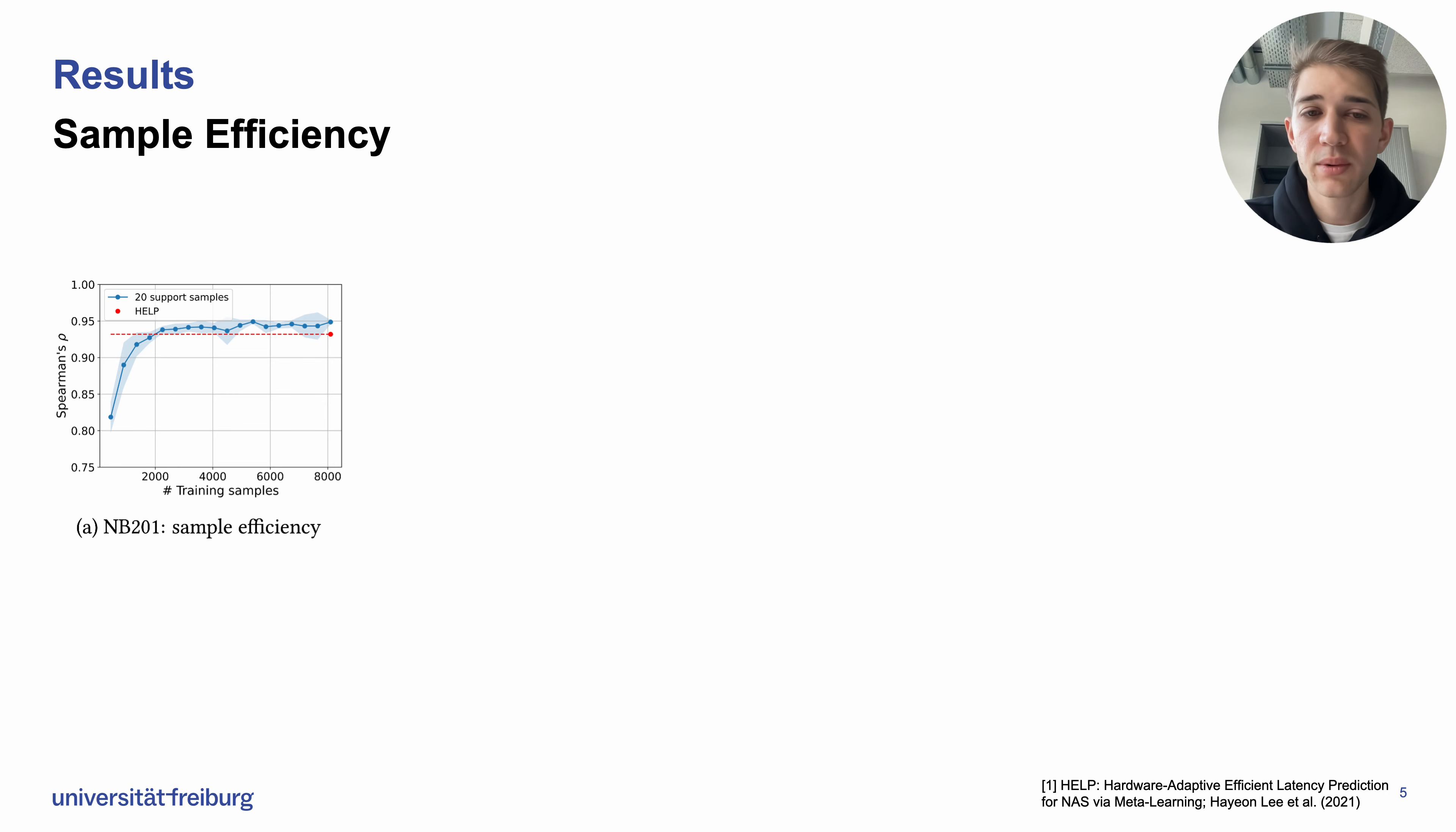The key takeaway from this graph is that we can achieve the same performance in terms of Spearman's rank correlation coefficient as HELP with fewer samples.